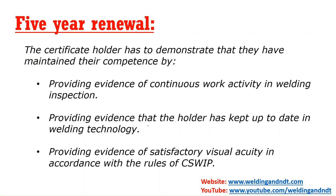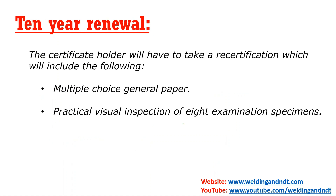For the 5-year renewal, you must demonstrate that you are still competent to perform welding inspection by providing evidence of continuous work activity — such as filling a log book — showing you are up to date with welding technology, and proving your eyesight meets their requirements. For the 10-year renewal exam, you will have to take a retest containing one multiple choice general paper and one practical paper.